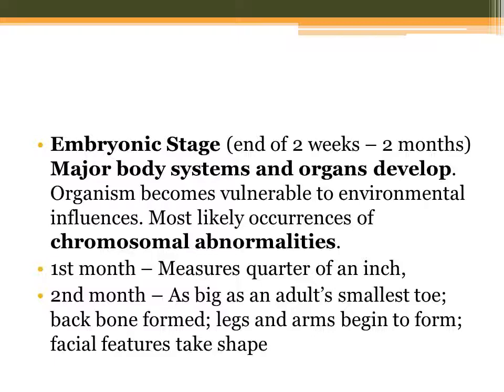Next we have the embryonic stage — from the end of two weeks to two months. During this stage, major body systems and organs develop. The organism becomes vulnerable to environmental influences, and this is the most likely time for chromosomal abnormalities to occur. The first body organ to develop is the heartbeat — if there is a heartbeat, the embryo is considered alive.